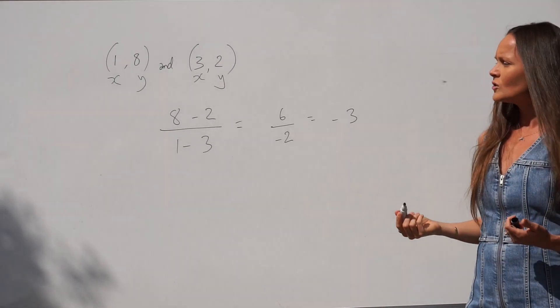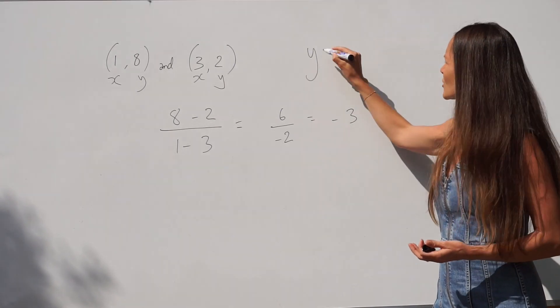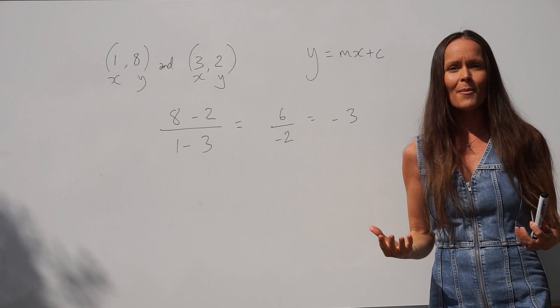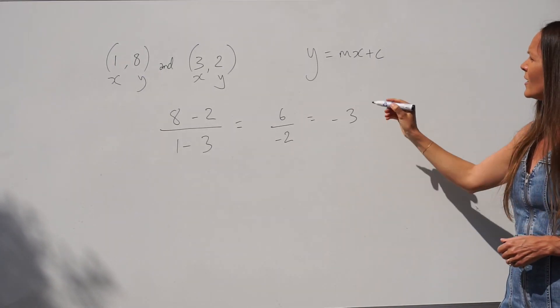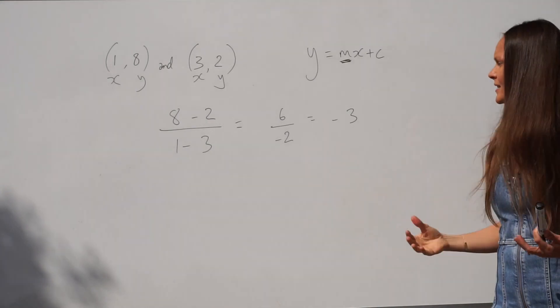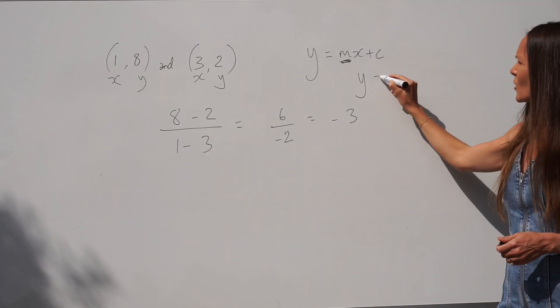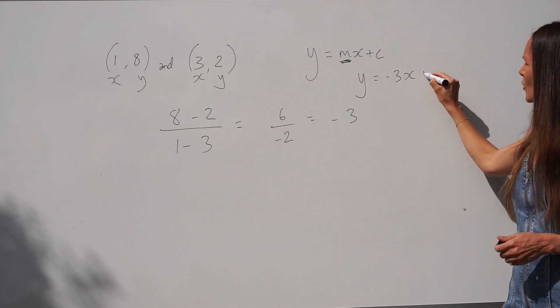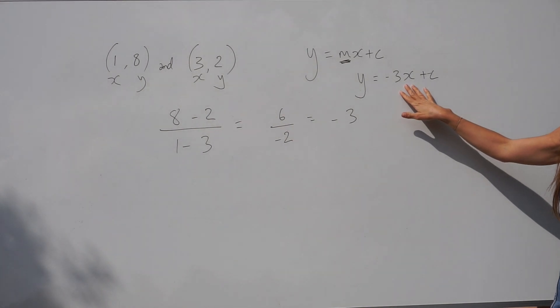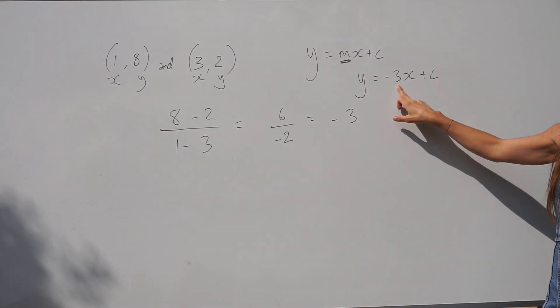So we can pop that into the equation. If we look at a straight line equation in this format, y equals mx plus c, you might have seen that before. m, the number in front of the x, represents the gradient, so minus 3. If we write down just what we have so far in our equation, it becomes y equals negative 3x plus c. I've just switched m to negative 3.